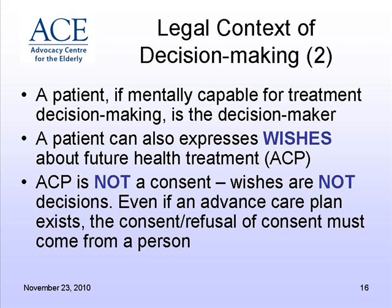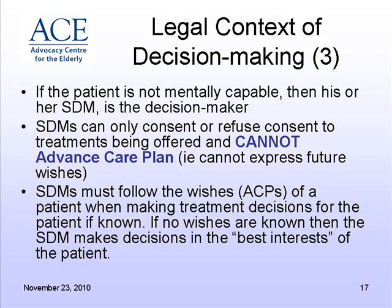A person can express wishes about their future health treatment — that's called advanced care planning. Advanced care planning is not a consent; wishes are not decisions. Even if an advanced care plan exists, consent or refusal must come from a person. If the person isn't mentally capable, it's their substitute decision-maker who makes that decision. A substitute can only consent or refuse consent to a treatment based on offered treatments — they cannot advance care plan. When families come to us with a level of care directive they're being asked to sign by the home, we advise them they cannot sign those documents because an advanced care plan cannot be signed by a substitute.